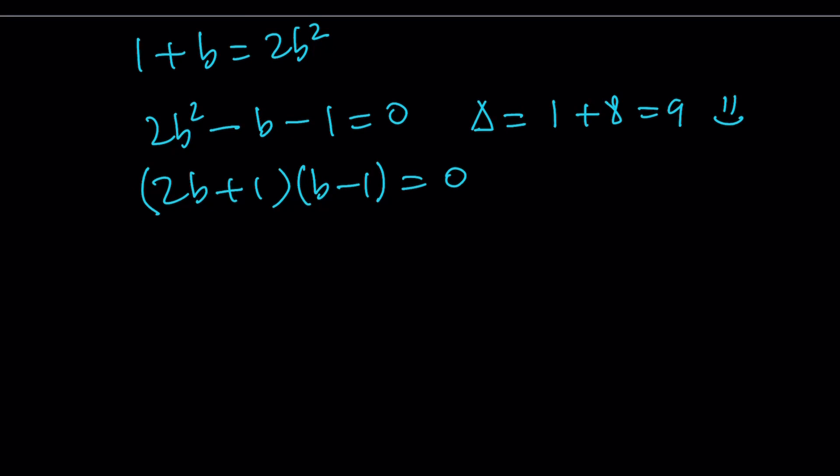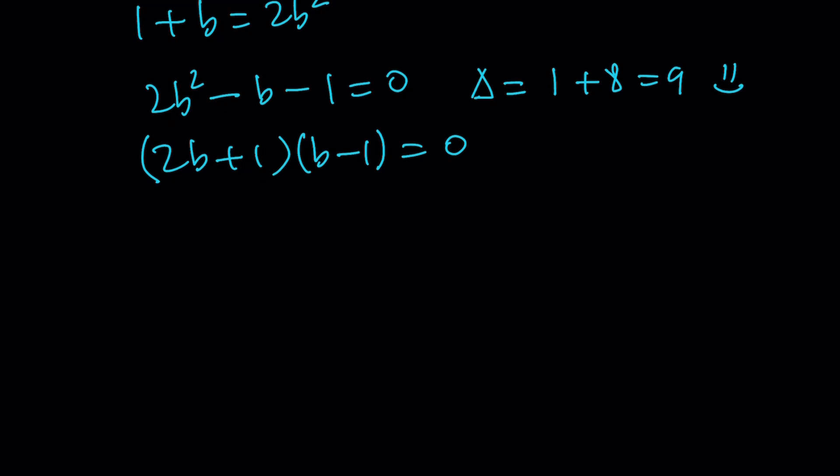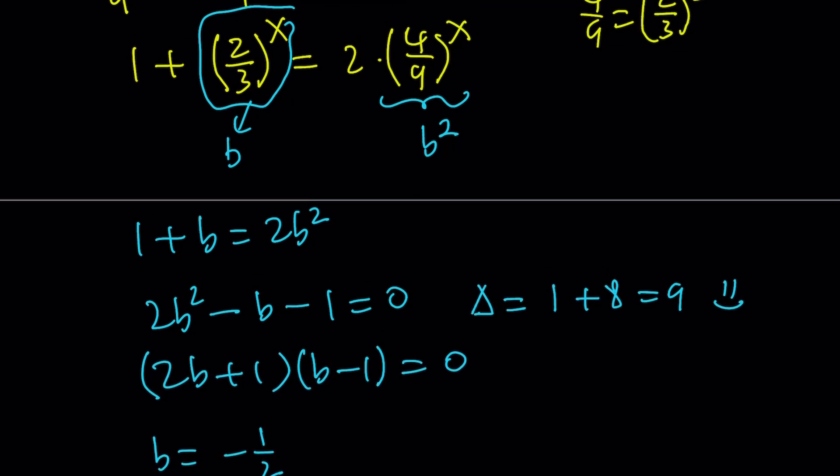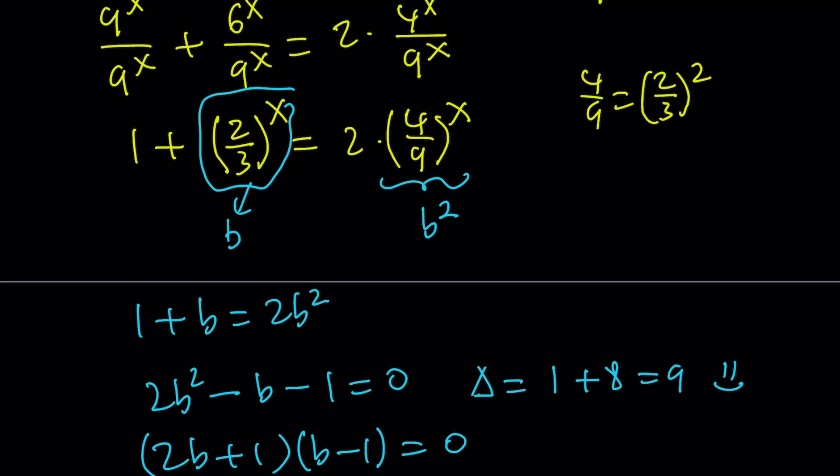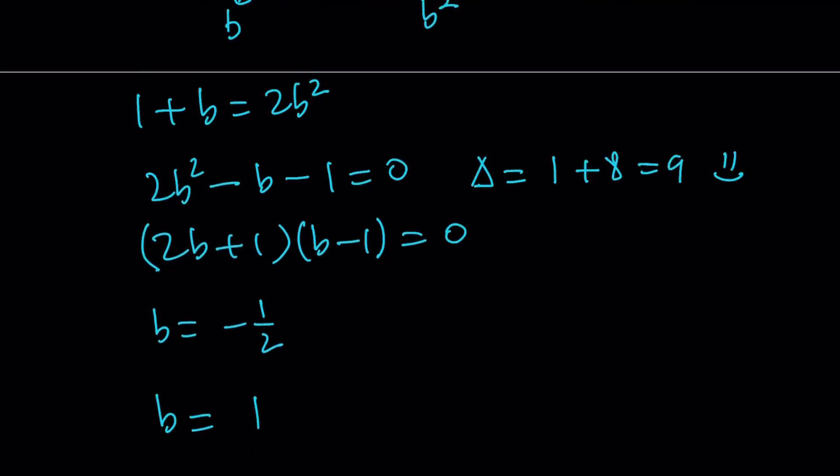And this gives us two equations. This is a quadratic with real solutions. So, b is either negative 1 half or 1. And what is b? Let's go back. b is 2 thirds to the power x. So, that's an exponential. 2 thirds to the power x.